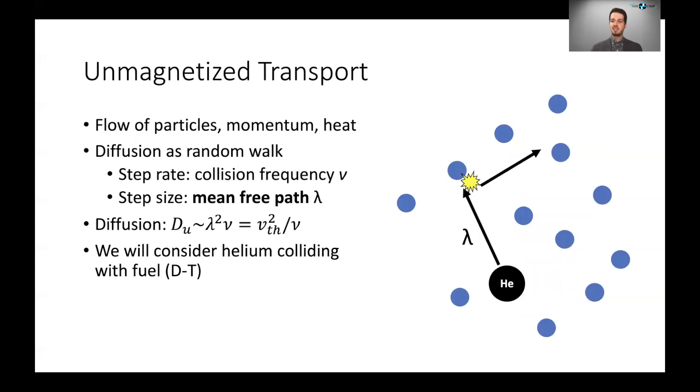Now in unmagnetized transport, the basic picture of how a helium ion, the ash, diffuses is basically you have a helium ion, it whizzes around free for some amount of time, eventually it gets close to some other particle, it collides, it goes off in another direction, it collides, and this is a random walk process where the typical step size is the mean free path and the typical step rate is the collision frequency. And in this talk we'll be considering mainly helium colliding with other ions, the fuel ions, because that's the dominant process that determines the collisional transport.